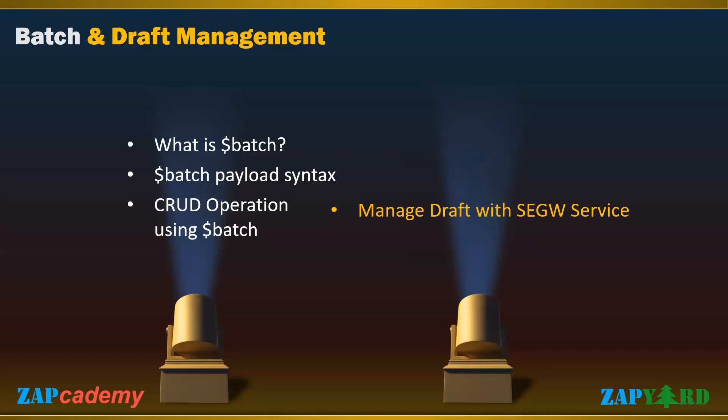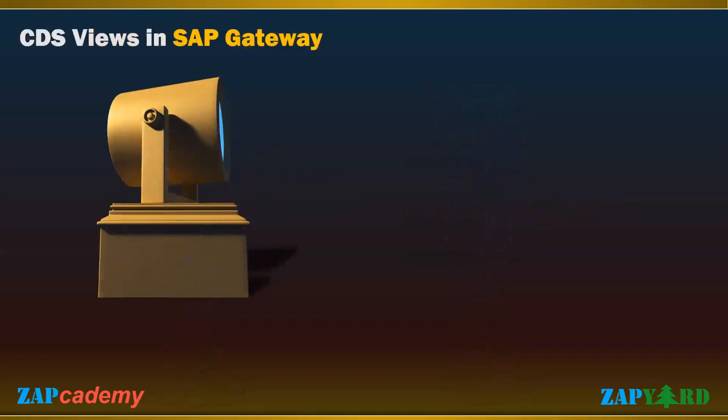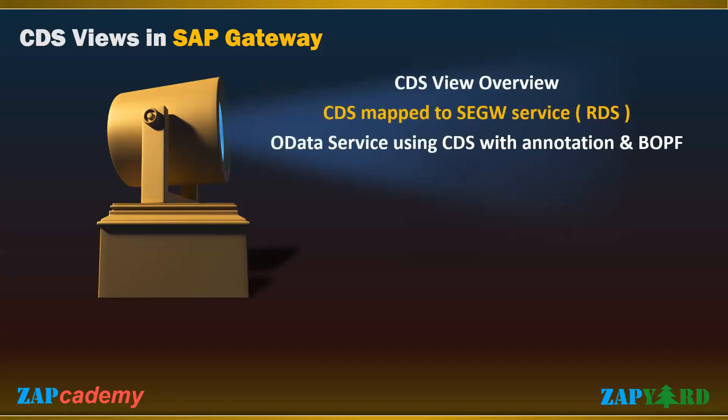Many times we have project requirements to park or draft documents. In this training, we will learn how to manage data with SEGW services. With ABAP 7.4 and more so with HANA, Core Data Services have taken the hot seat. In this course, we will talk briefly about CDS and then learn how to map CDS to SEGW services. We will also learn how to create OData services using CDS annotations, and then we will do some quick hands-on using CDS and BOPF. This will be a very interesting session which participants should not miss.